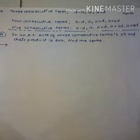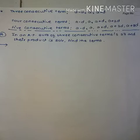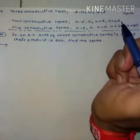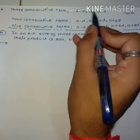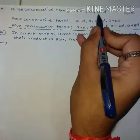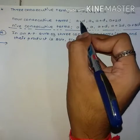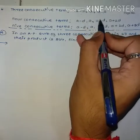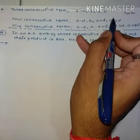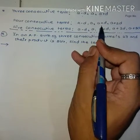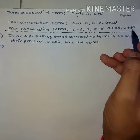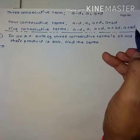Before the next sum, you need to know how to represent consecutive terms. For 3 consecutive terms: (a−d), a, (a+d). For 4 consecutive terms: (a−d), a, (a+d), (a+2d). For 5 consecutive terms: (a−d), a, (a+d), (a+2d), (a+3d). Keep these by heart.